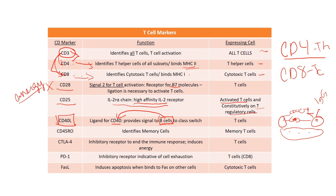CD40 ligand allows for CD40 ligation, which allows for class switching. The ligand is expressed by T cells, particularly T helper cells. Remember that there are patients who lack either CD40 or CD40 ligand, and those patients have a disorder known as hyper-IgM. Hyper-IgM literally means they can only produce IgM — they can't class switch because they don't have this signal from CD40 and CD40 ligand.